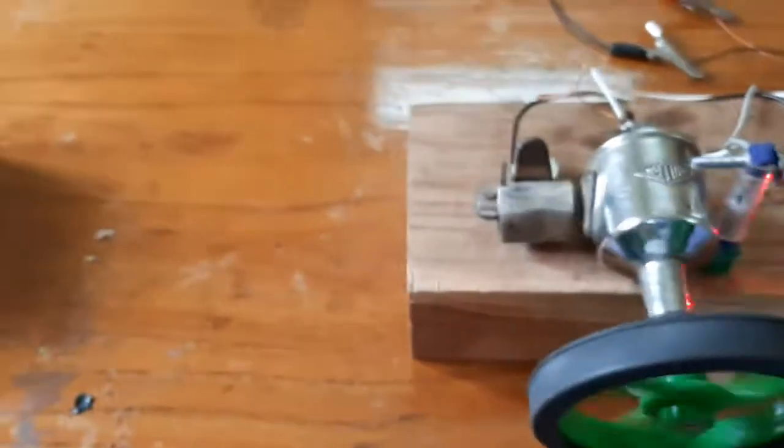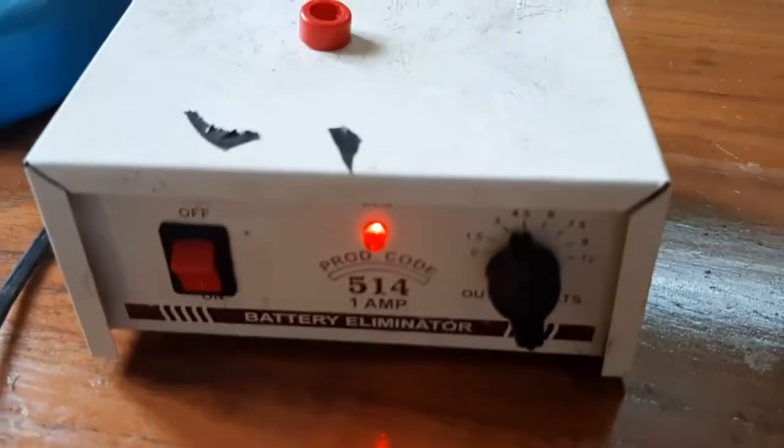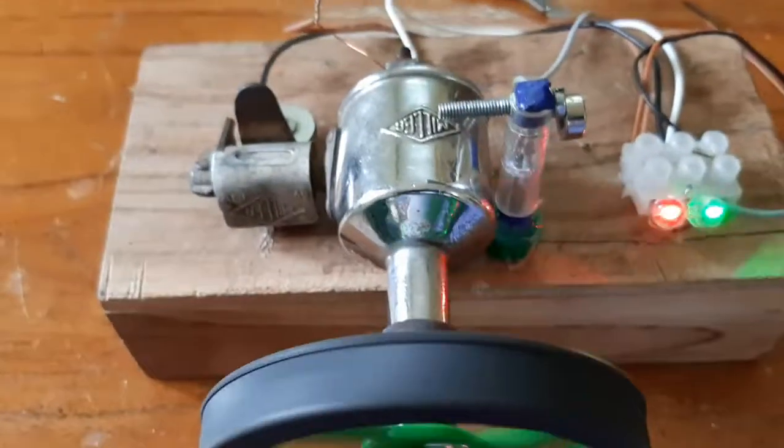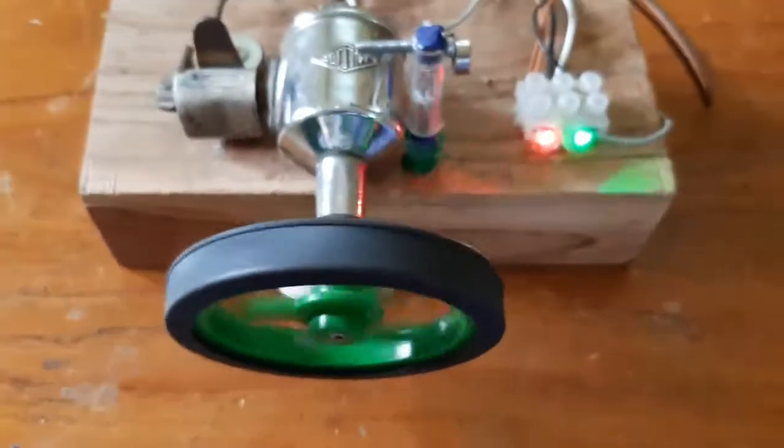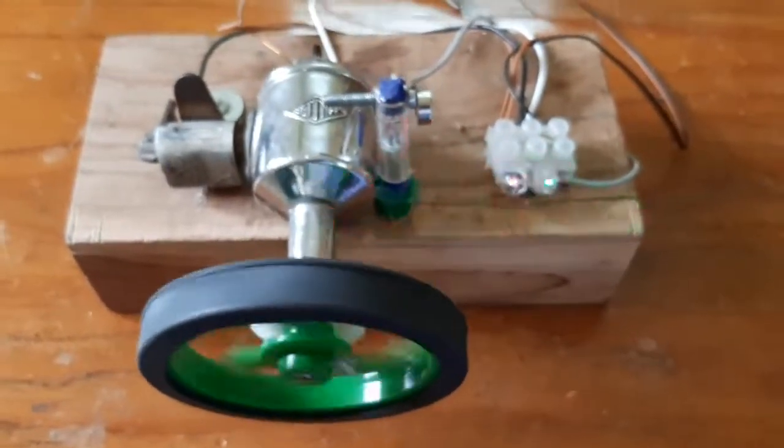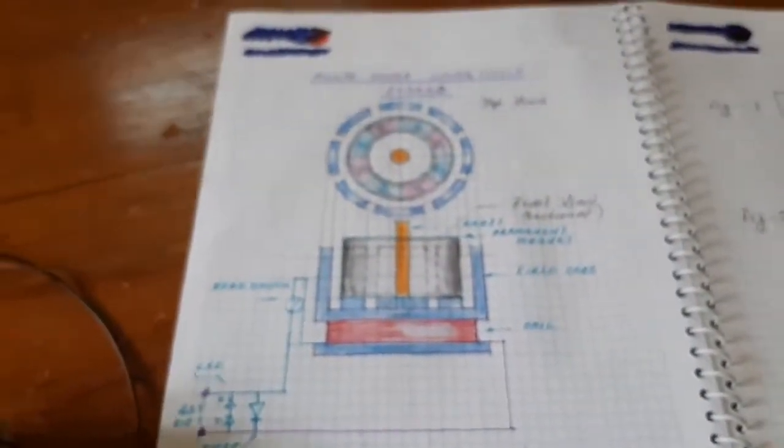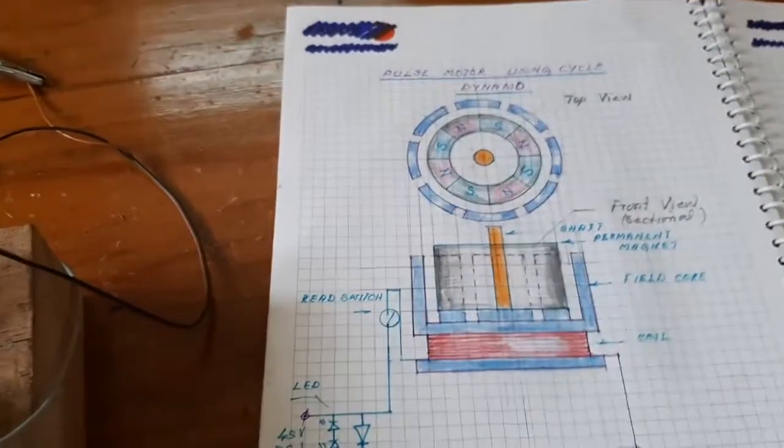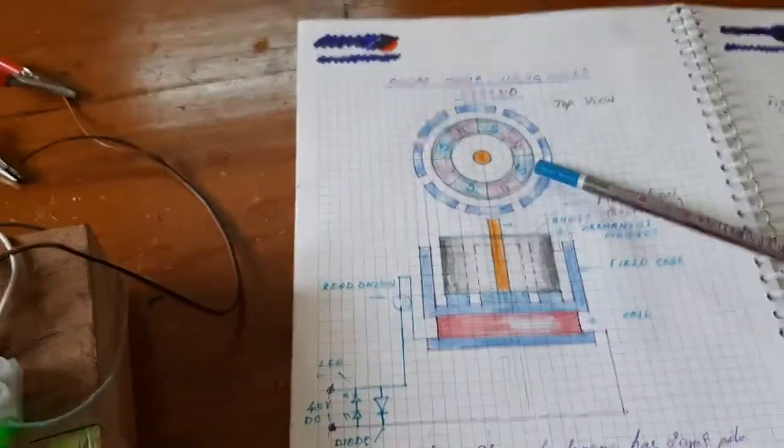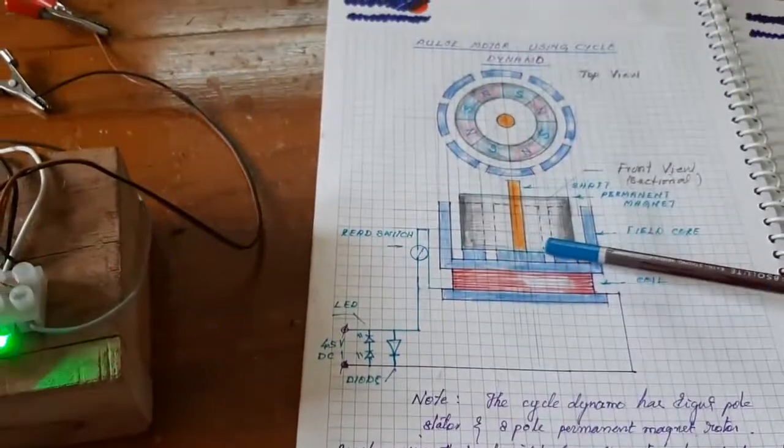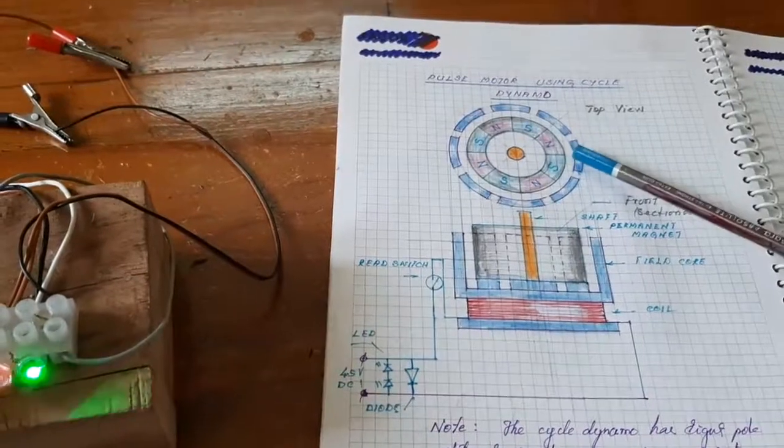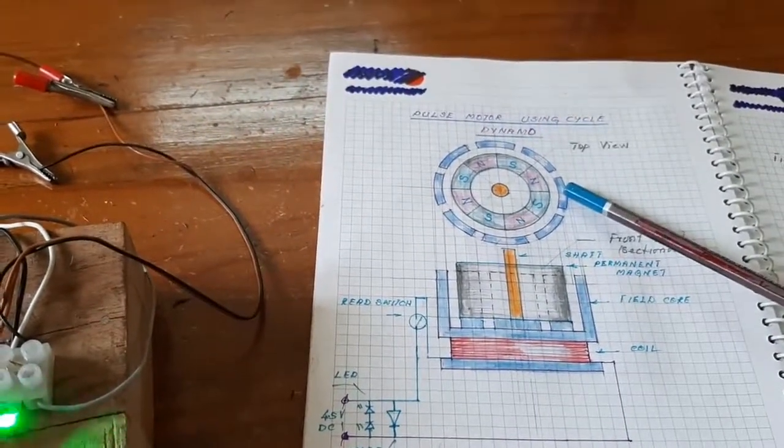Here, a 4.5 volt source is given as shown. Look at the circuit diagram of the dynamo. Here this is the top wheel and this is the sectional front wheel. The cycle dynamo has an eight-pole field magnet and eight-pole rotor.